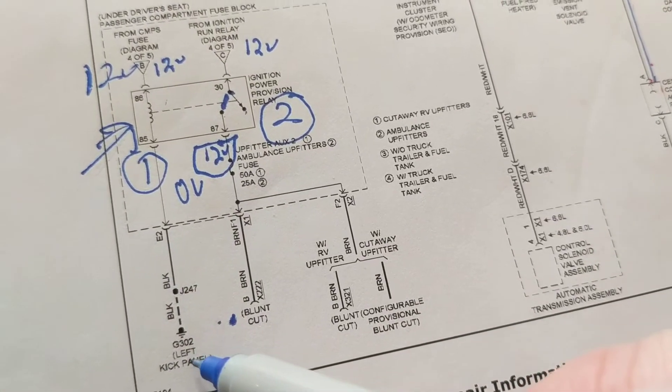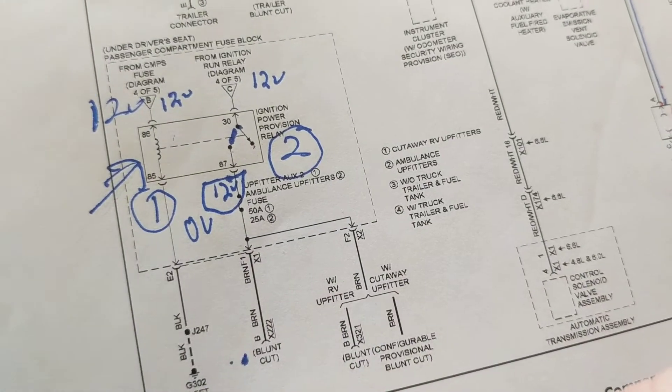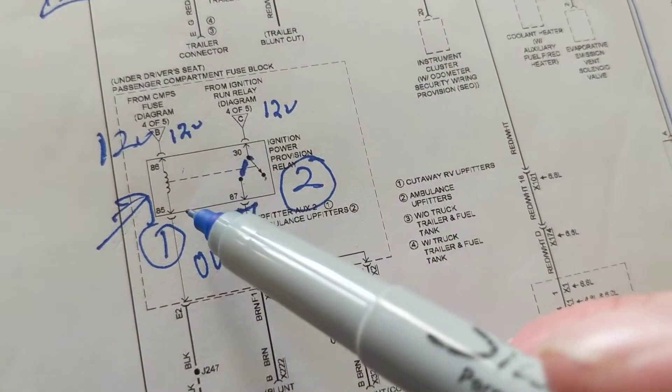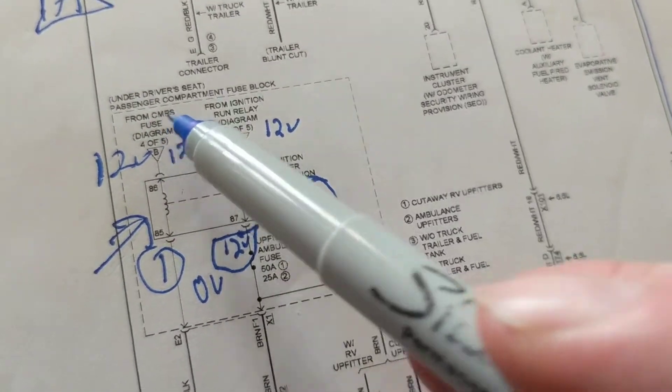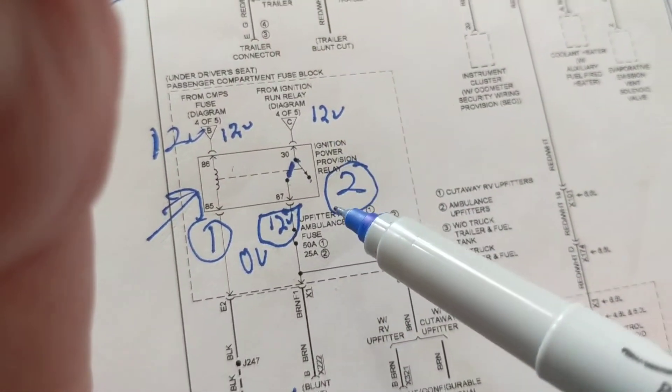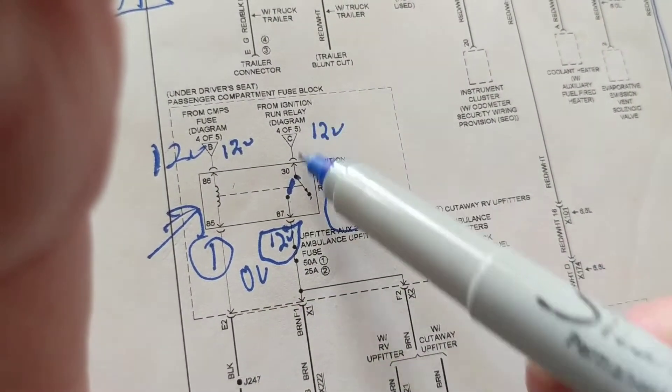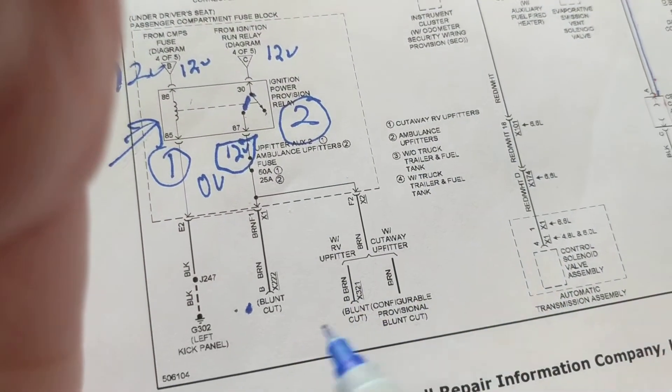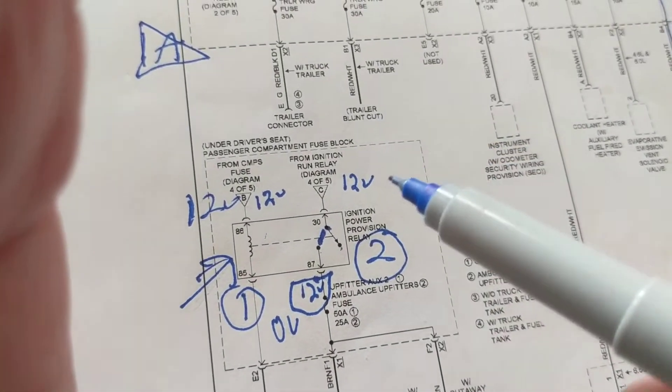In this case it's going to a physical ground, but let's say there would be a computer grounding it. This would tell me the computer grounds it, the relay is good, 12 volts over here, 12 volts over here, and this flipped it. Everything on this side is good, everything on this side is good. That means the problem is after it.